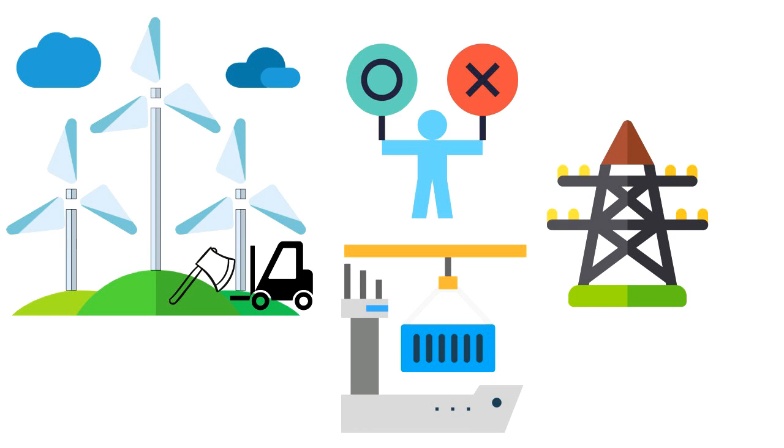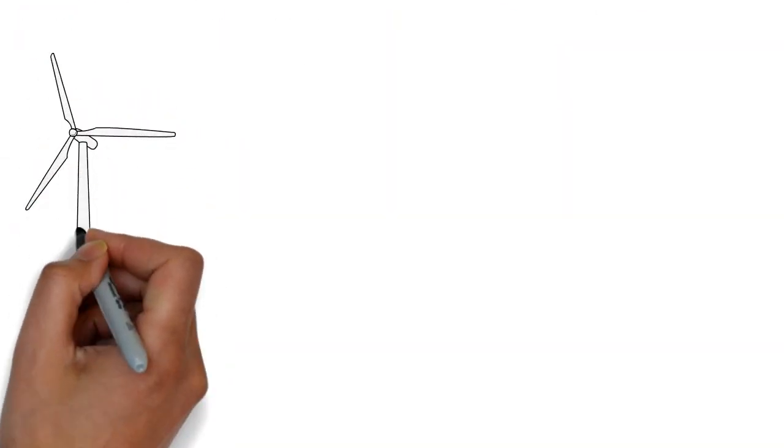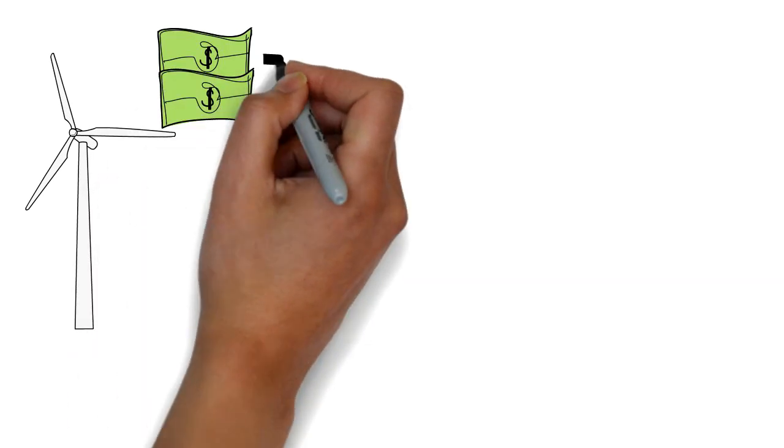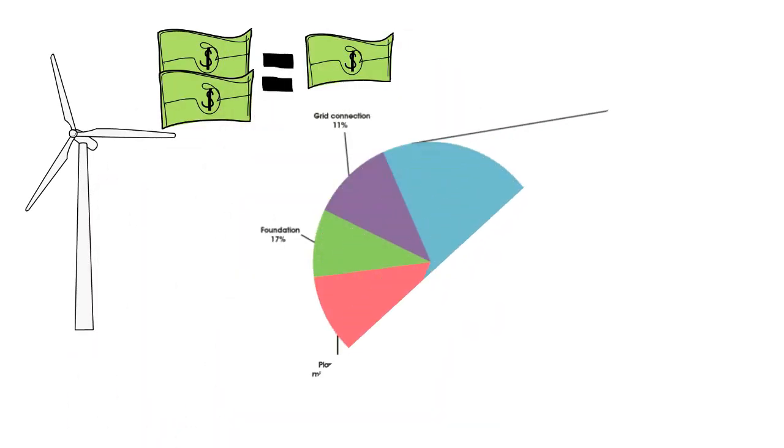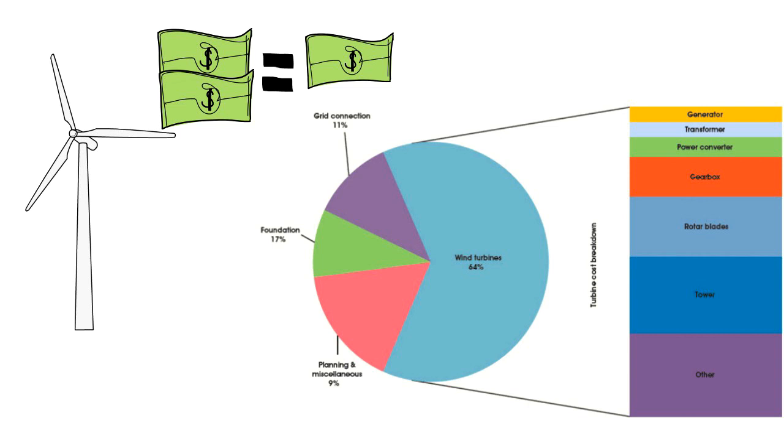In many cases, the turbines can be acquired for less than half the price of a new one. Given that wind turbines can make up to 60% of the overall cost of installation and commissioning,